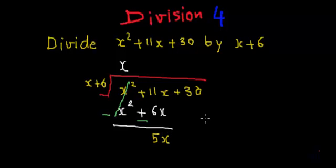And now what we do in normal division? In the next step, we note down the next term. So here also, I'll note down plus 30. And now I'll repeat the same procedure over here also.